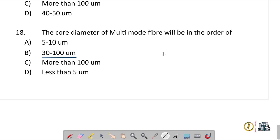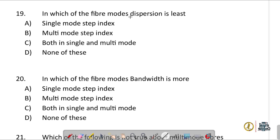Which fiber mode has the least dispersion? Dispersion is least in single-mode step-index fiber. Which fiber mode has more bandwidth? Since dispersion is less in single-mode step-index fiber, bandwidth is also more for single-mode step-index fiber.